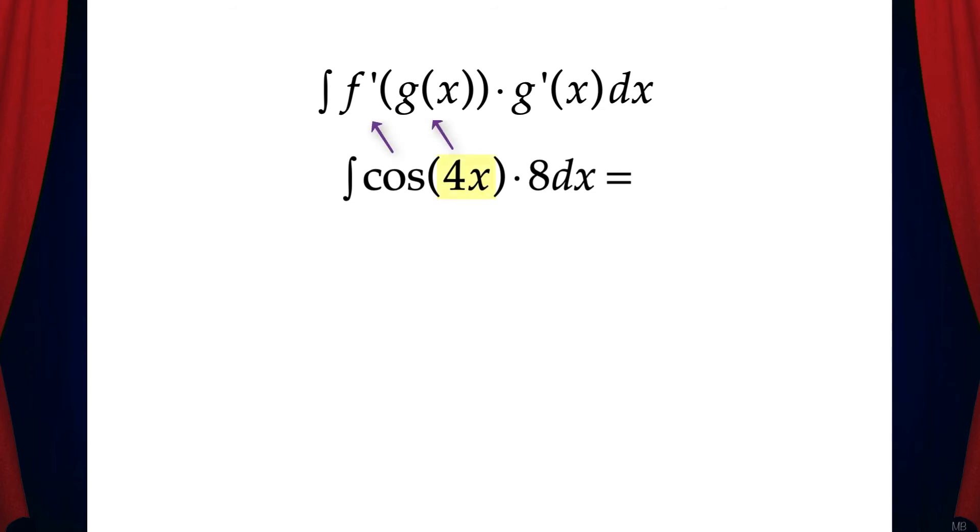Just like the previous example, we can let g be 4x. But if that's the case, g prime is not 8. We know that g prime would be 4.